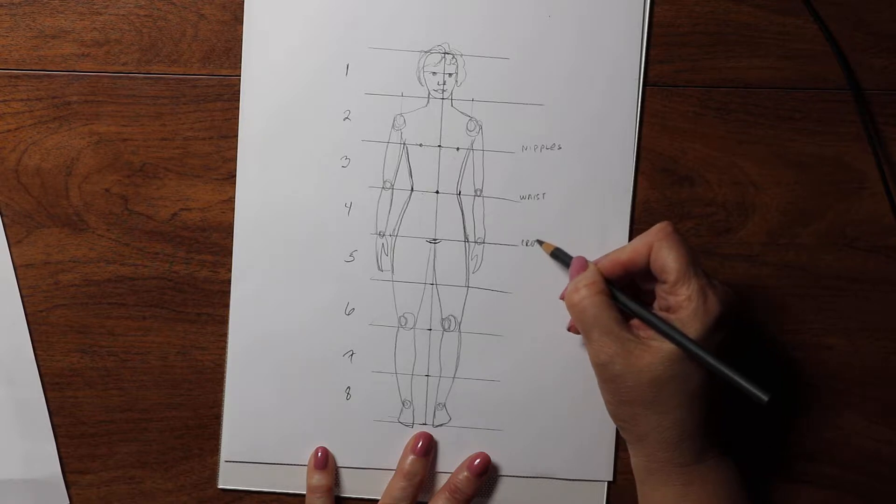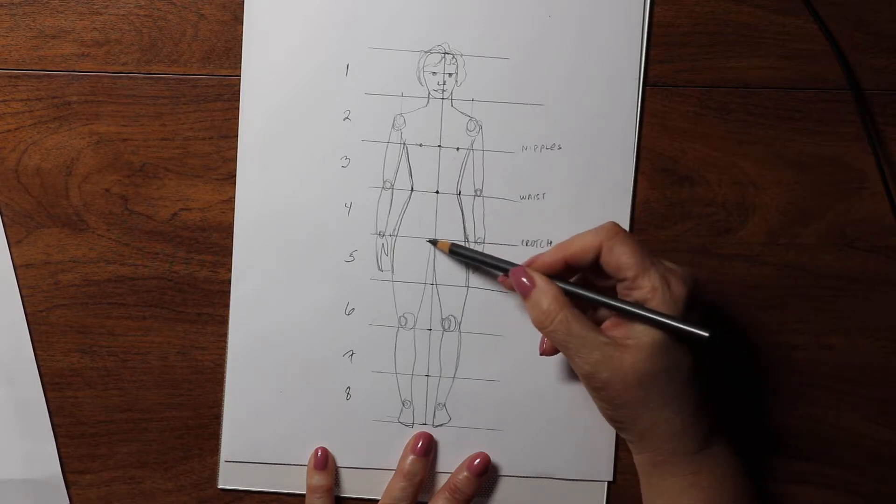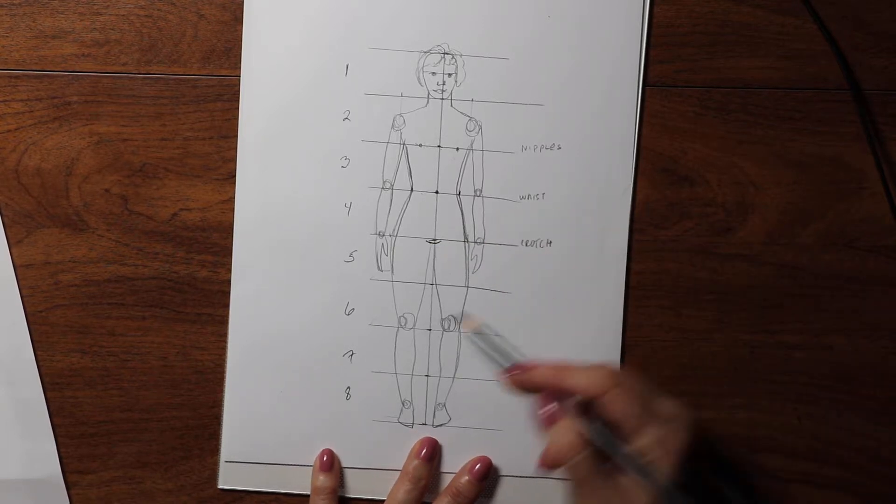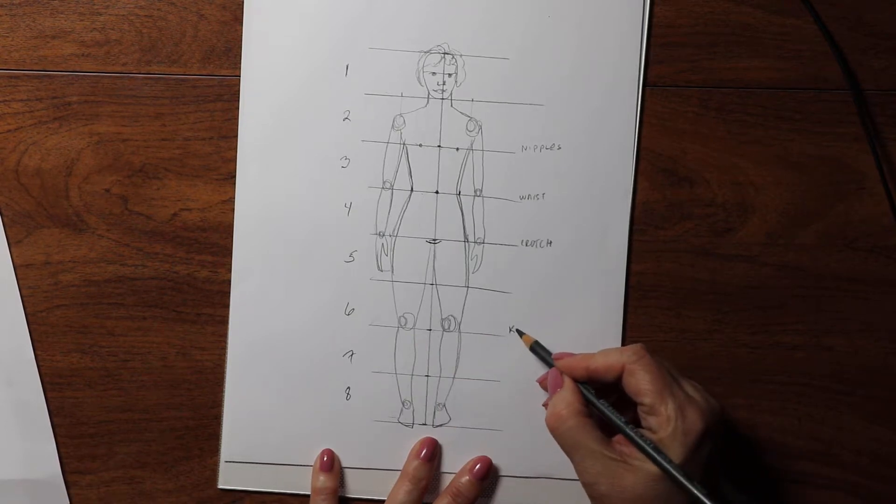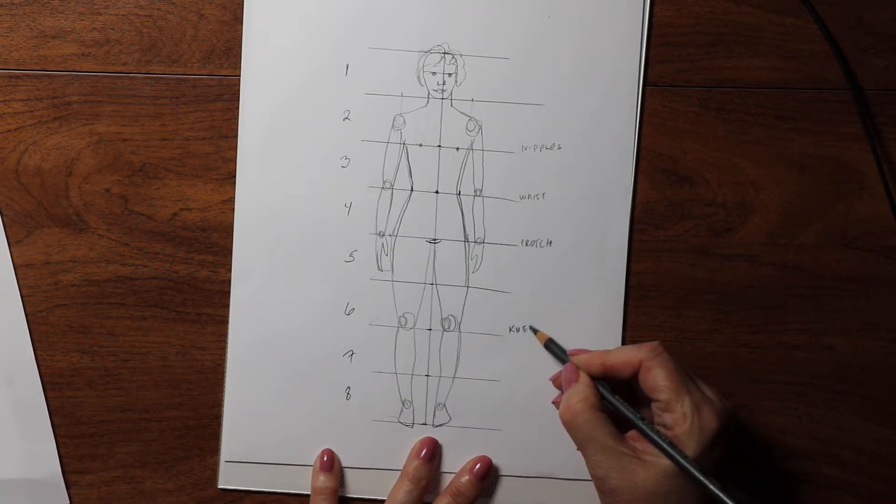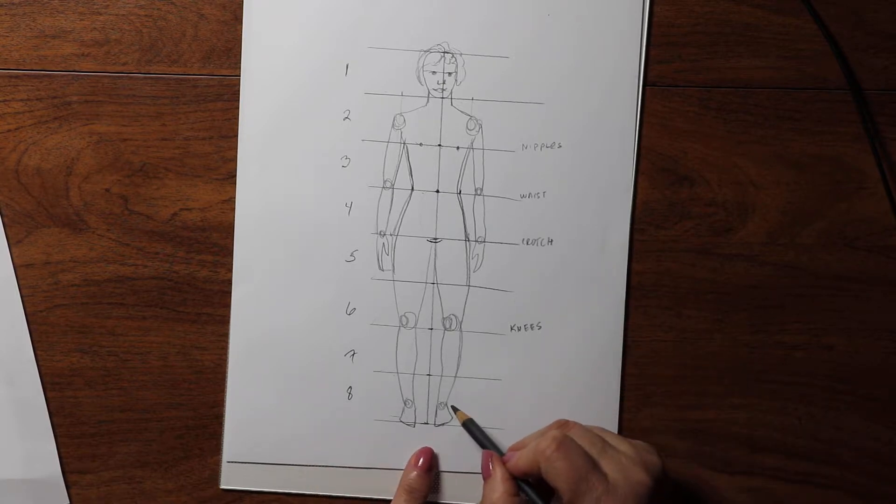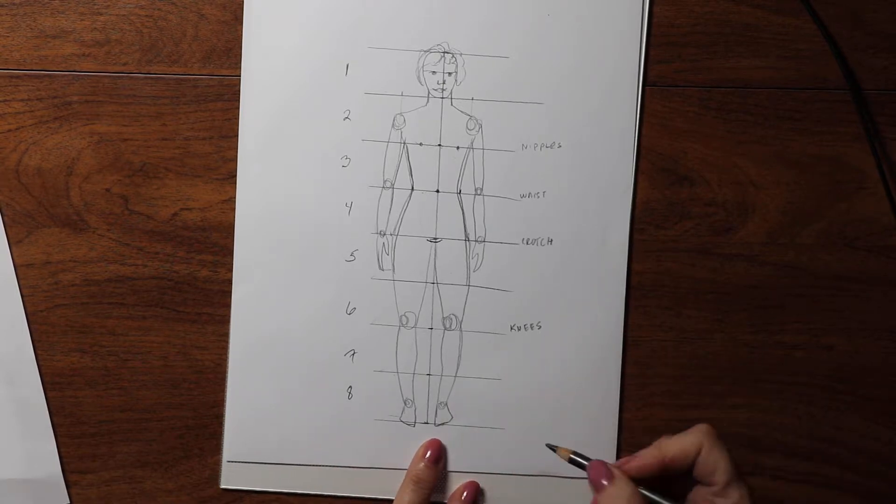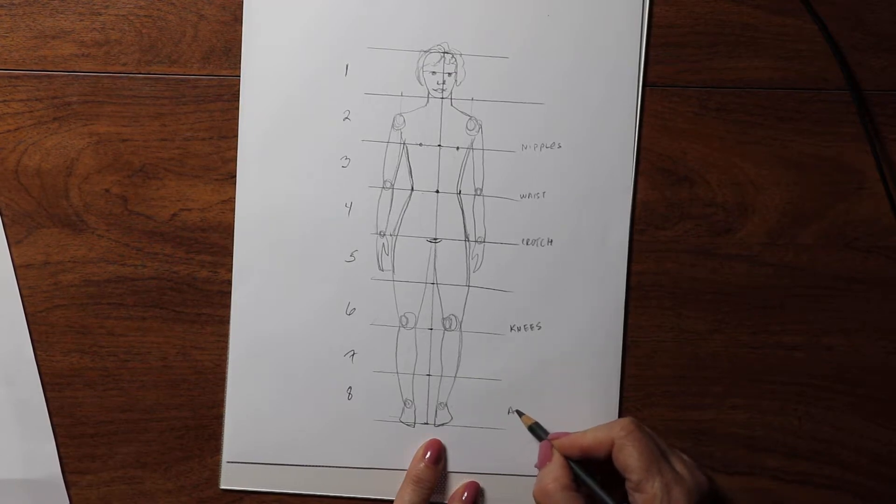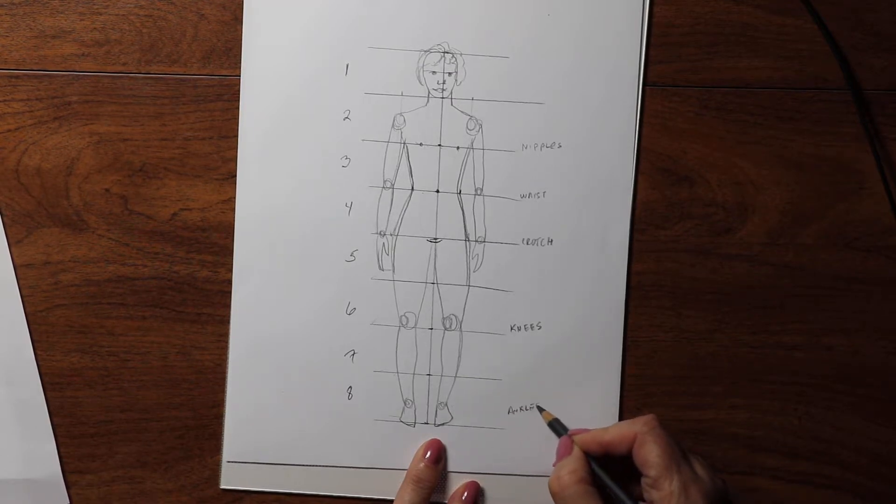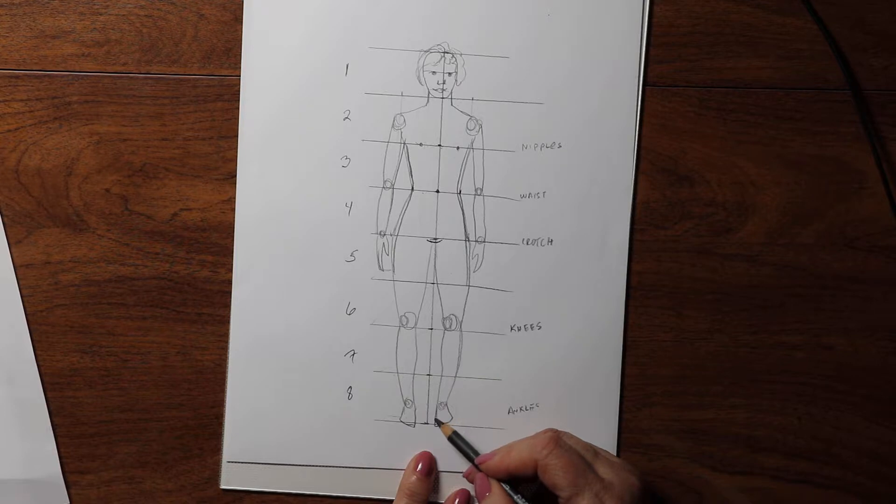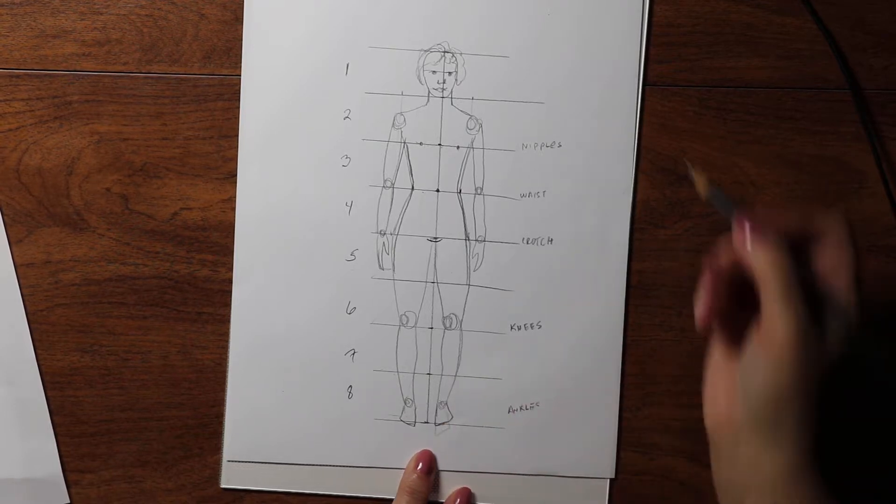The crotch is at the bottom of the four head. The knees are at the bottom of the six head. The ankles are like about three quarters of the way. Now it's going to be different if you have somebody in heels, their foot will be much more extended, but we'll get into that later.